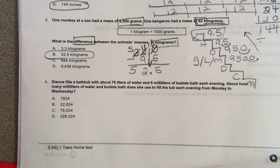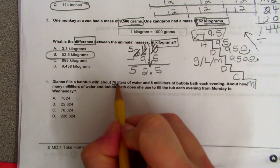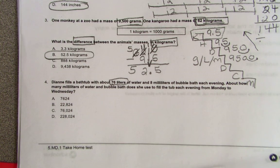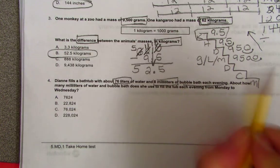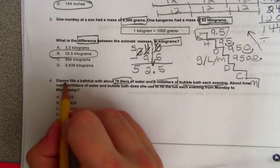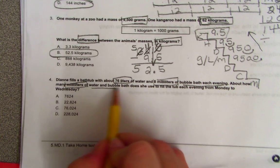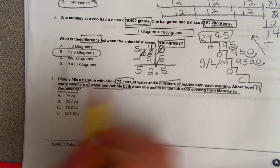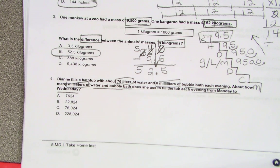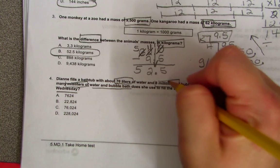Deanna fills a bathtub with about 76 liters of water and 8 milliliters of bubble bath each evening. About how many milliliters of water and bubble bath does she use to fill the tub each evening Monday to Wednesday? So it's a multi-step problem. So it wants to know the answer in milliliters.